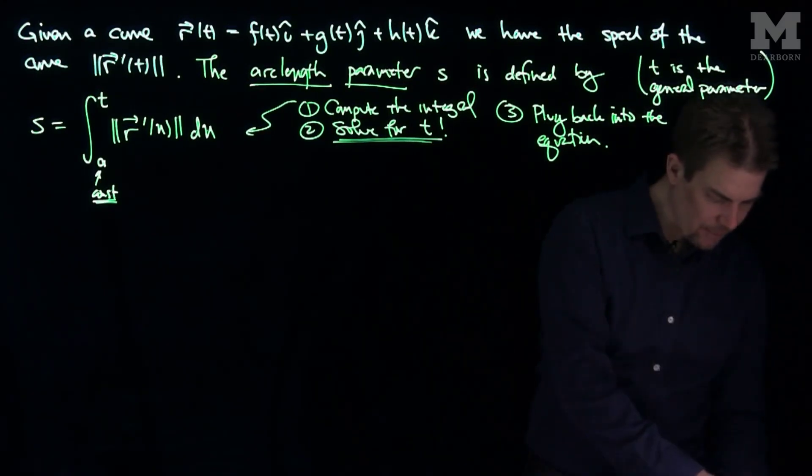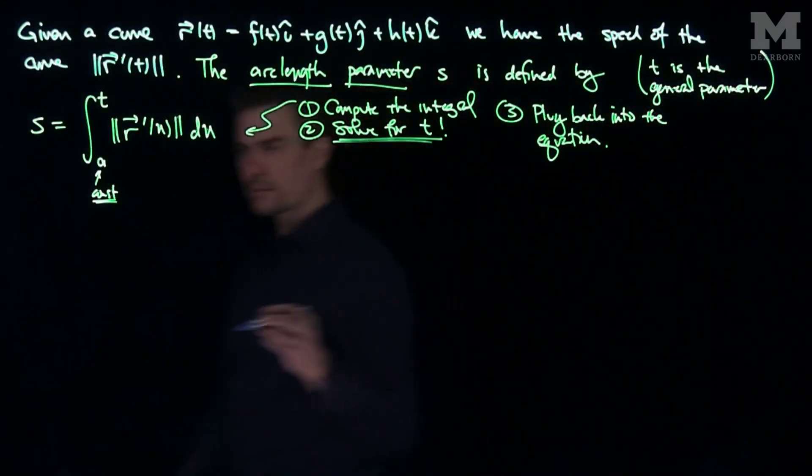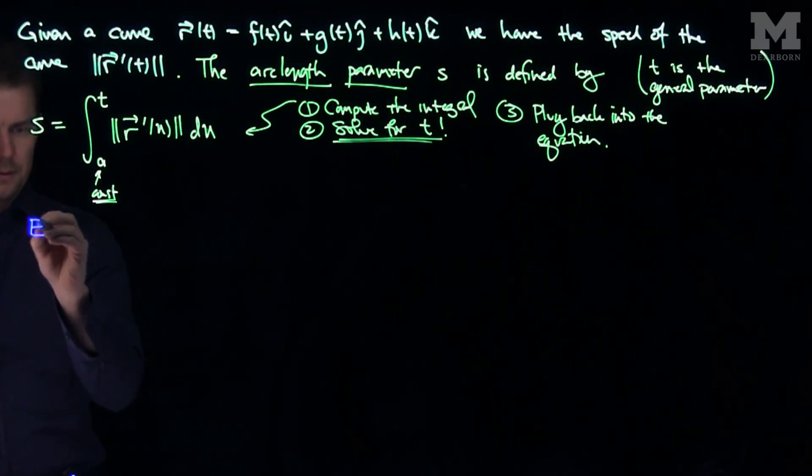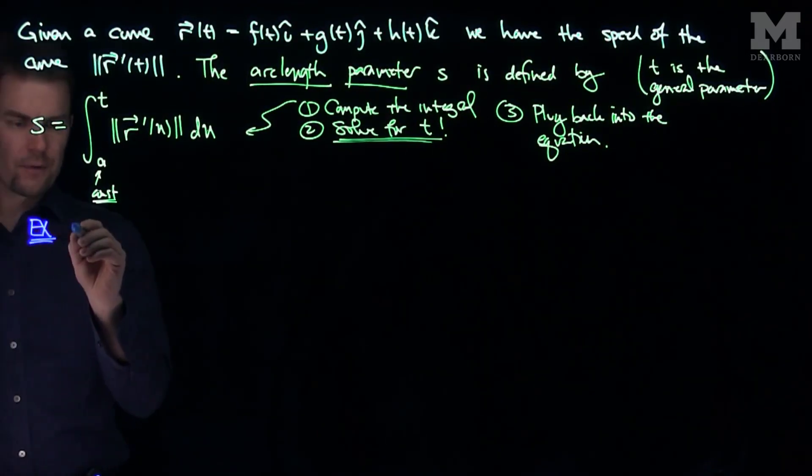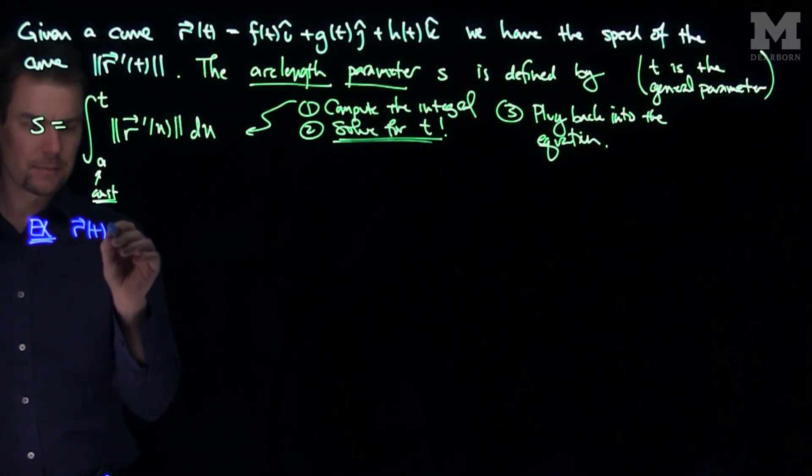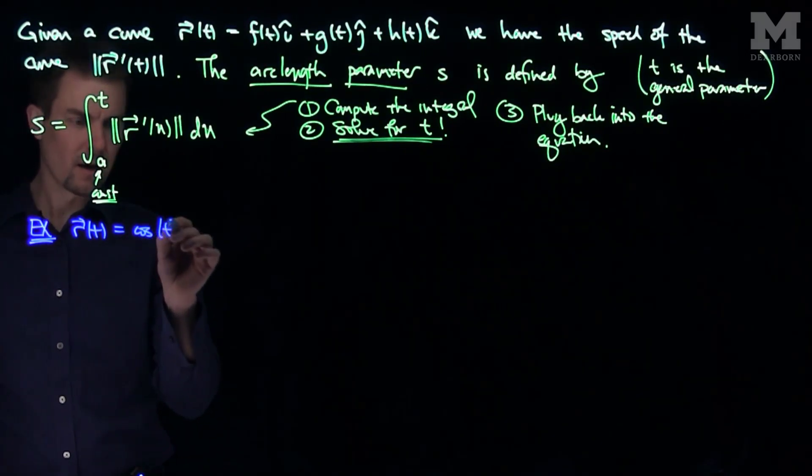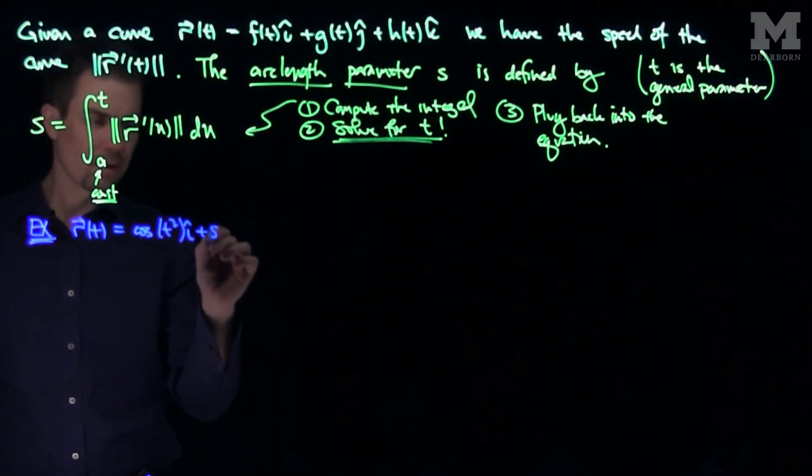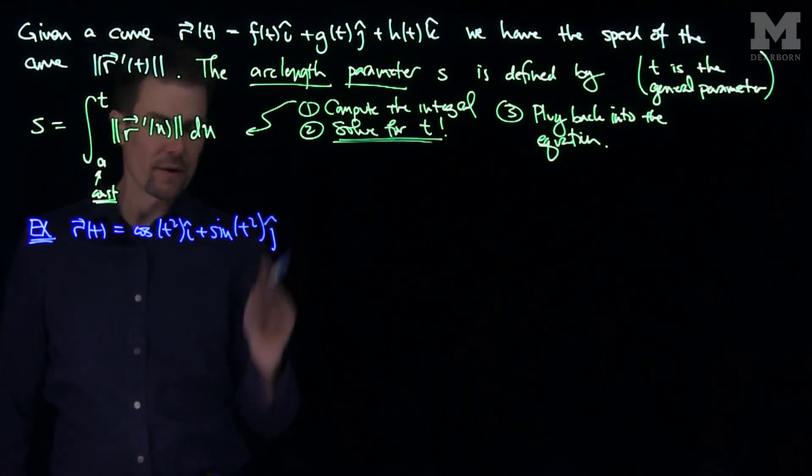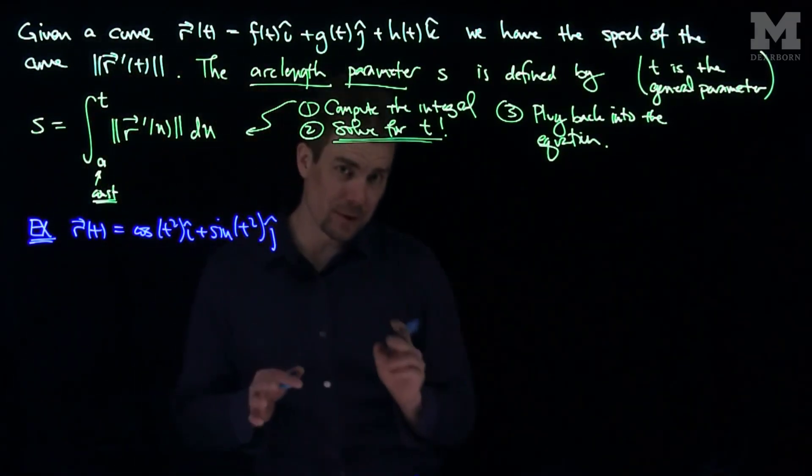Let's see an example. If we look at this curve R(t), which is cosine of t squared i-hat plus sine of t squared j-hat, we've seen before that this curve parameterizes the unit circle.